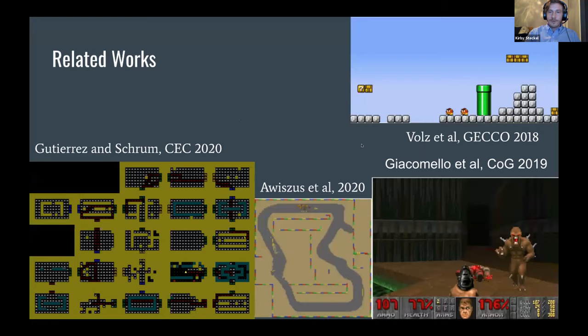So some previous work that inspired our work is Dr. Shrum's work in generating Mario levels in 2018. And then there was work generating Doom levels in 2019. And then using a variant called the TOAD-GAN, there was research that was able to create Mario and Mario Kart levels. And then additionally last summer, Jake Gutierrez and Dr. Shrum had work that combines GANs and graph grammars to create Zelda dungeons.